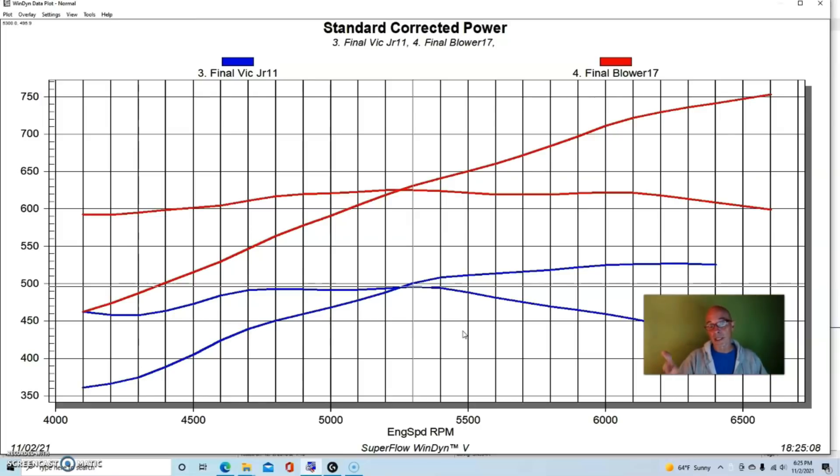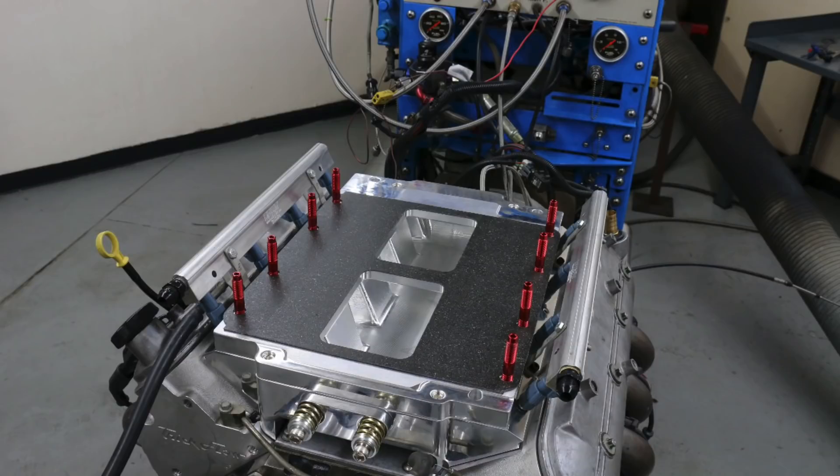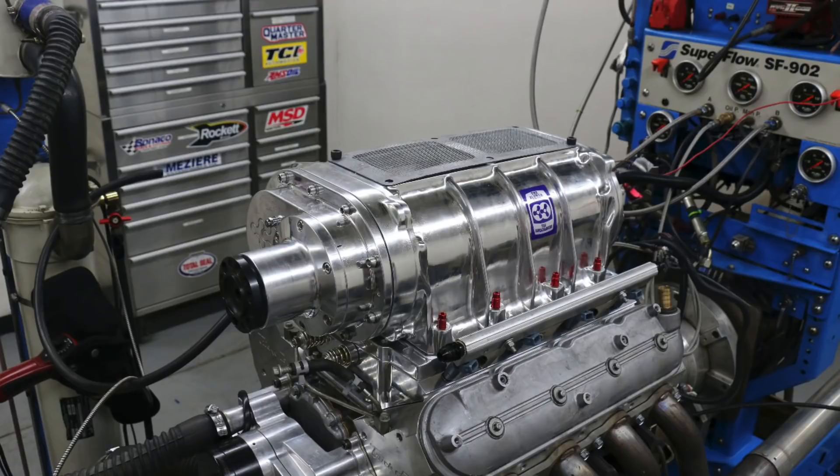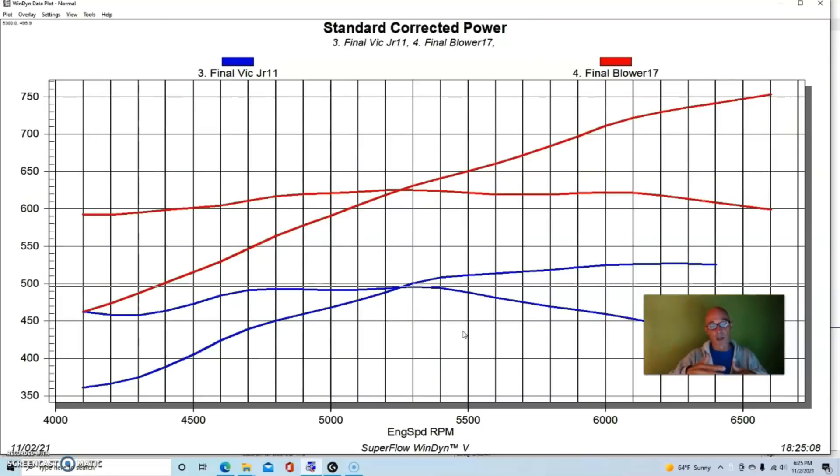So we ran the 671. The kit came from the guys at Speedmaster, meaning the intake manifold and pulleys and stuff. The blower itself actually came from the guys at Blower Shop who do an excellent job over there. This blower has been run a ton of times on a bunch of different applications on supercharged combinations both on the LS and small blocks and big blocks. In fact, this same blower was getting up near a thousand horsepower on a big block, so we know it has lots of potential.